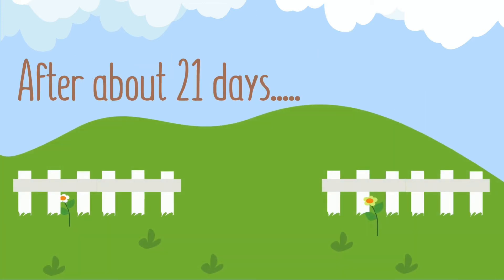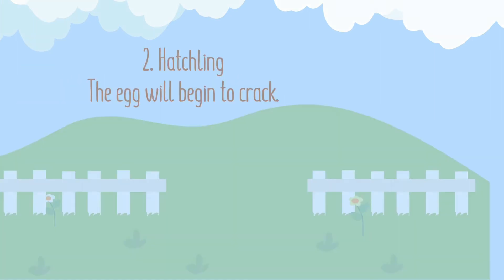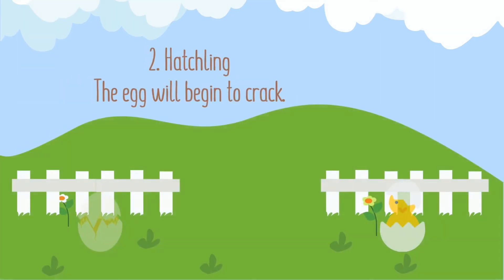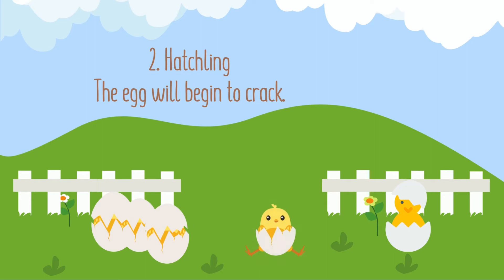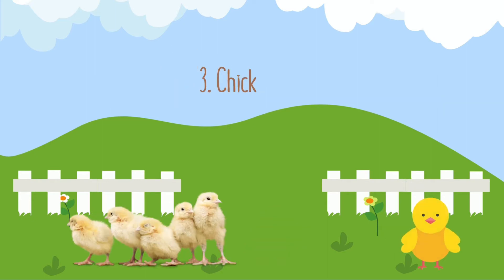After about 21 days, we can see number two: hatchling. The egg will begin to crack. Number three, we can see chick — after hatching, the egg becomes a chick. Wow, so wonderful!